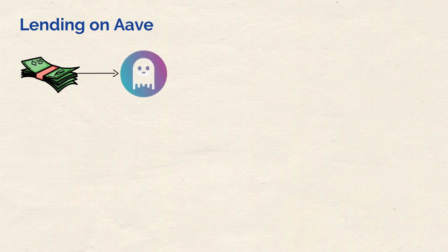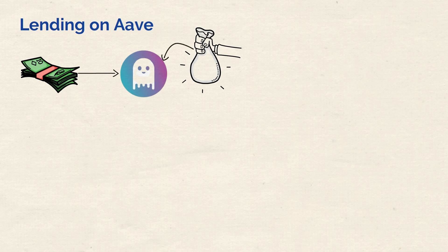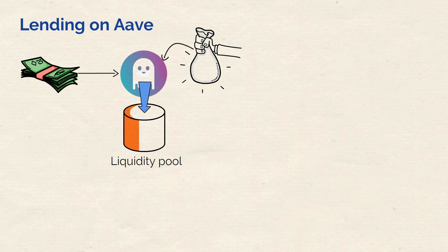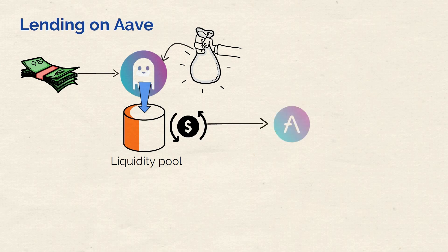I'll begin with lending on Aave. Whenever you want to start lending your assets on the platform, you simply deposit them into Aave's liquidity pool. A liquidity pool is essentially a place where you can put your crypto in order to help the functioning of the Aave exchange. As a reward, you get liquidity provider tokens called ATokens.